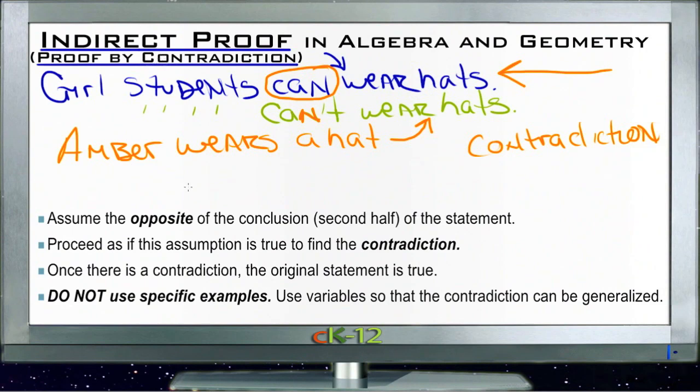The first thing you want to do is assume that the opposite of the conclusion, the second half of the statement, is true. Like we did here, we took 'can wear hats' and we found the opposite of it, which was 'can't wear hats.' Then we proceed as if that assumption is true until we find a contradiction. In this case, our contradiction was that Amber was wearing a hat.